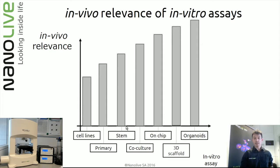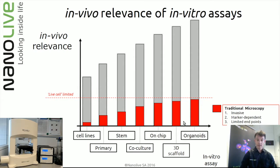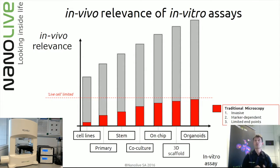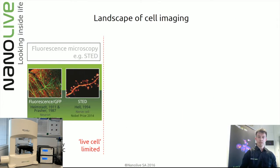Independently of how advanced your cellular model is, a study is not composed only of the model but also of the system you use to look at it. This is where traditional microscopy — which is invasive, marker-dependent, and most of the time endpoint — starts to show its limits. We're talking about a live cell limit.